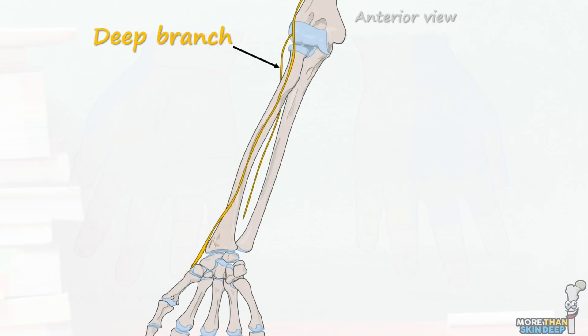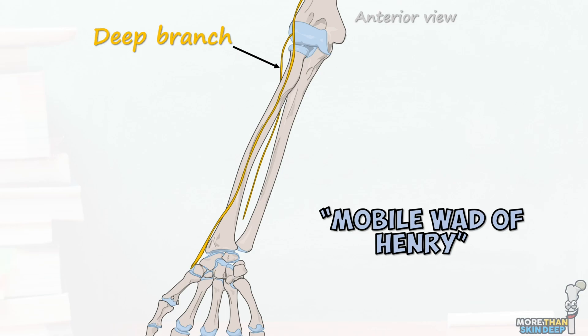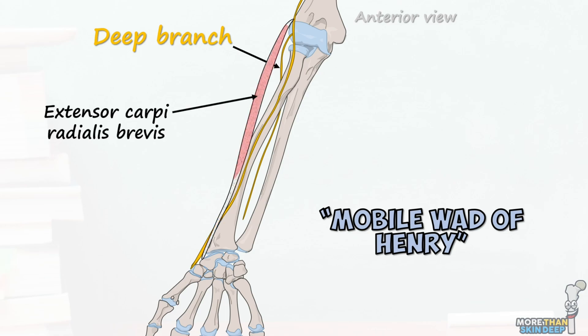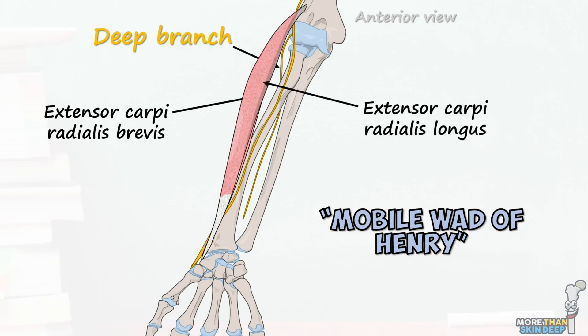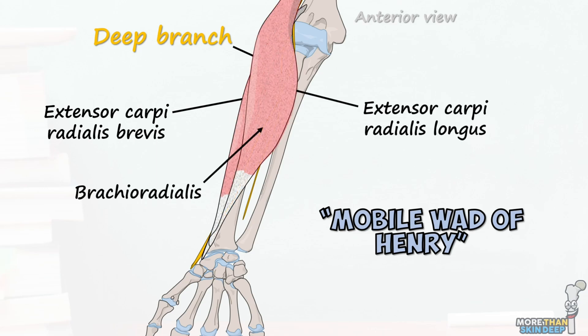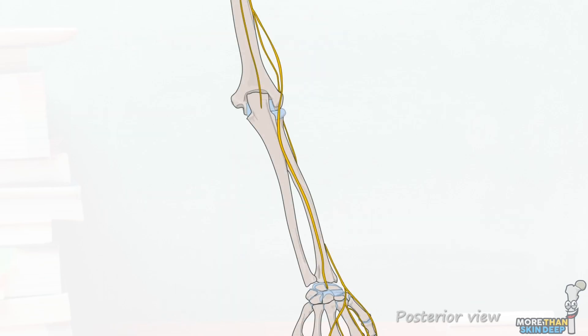In contrast to the superficial branch, the deep branch of the radial nerve passes posteriorly. Its first important contribution is to the lateral forearm muscles found in a group known as the mobile wad of Henry: the extensor carpi radialis brevis, extensor carpi radialis longus, and brachioradialis. These muscles are predominantly elbow flexors and wrist extensors. After innervating the mobile wad, the nerve passes backwards through the forearm into the posterior compartment, where it provides motor innervation to most of the extensor muscles of the wrists and fingers.